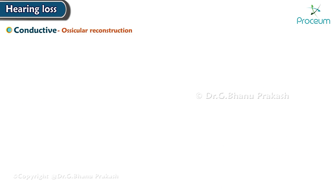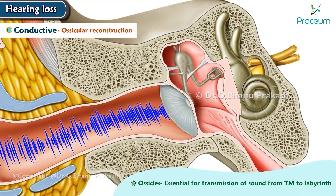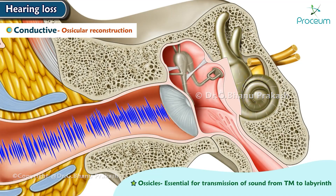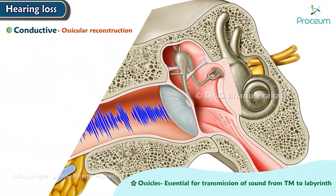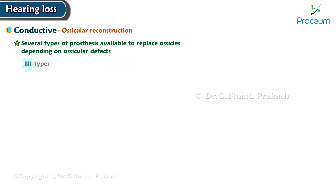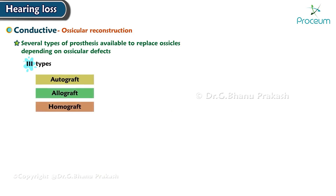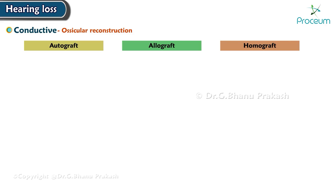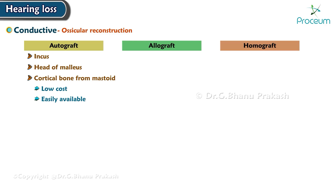Ossicular reconstruction is performed because ossicles are essential for the transmission of sound from the tympanic membrane to the labyrinth. Several types of prosthesis are available to replace ossicles depending on the ossicular defects. The three types are autograft, allograft, and homograft. Autograft materials include the incus, head of the malleus, and cortical bone of the mastoid. These are of low cost and easily available, but there is a risk of harboring disease. They can be sculptured to bridge the gap.